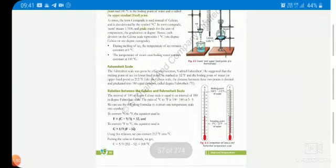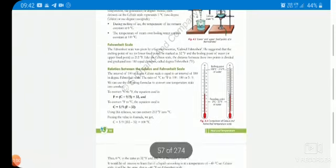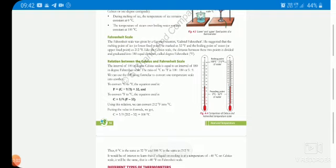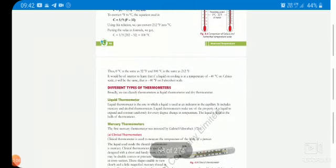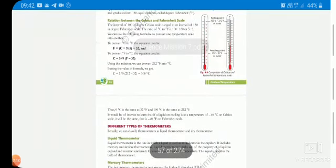And there are on the thermometer two scales which are often marked. Most common one is the Celsius scale. Other one is the Fahrenheit scale. We can convert the Celsius temperature into Fahrenheit and Fahrenheit temperature into Celsius. I have explained you with the examples given there.